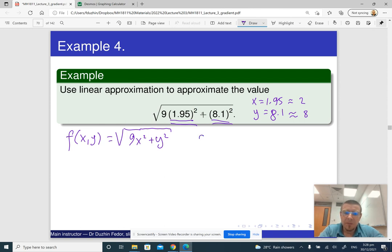And my a and b are going to be two and eight. And probably the change in x, so x minus a, which I think is convenient to denote as delta x, but it's up to you, is minus 0.05. So the actual x is my a minus 0.05. And y minus b, which is delta y, the change in y is 0.1.